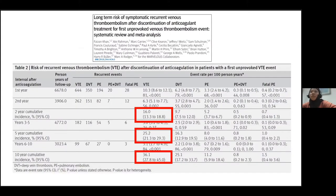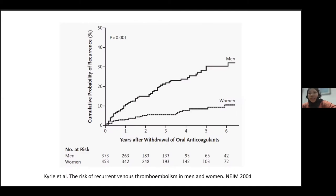If you've had an unprovoked event, your risk of recurrence is very high. This meta-analysis published in 2019, involving over 7,000 patients, looked at the rate of first recurrent VTE after discontinuation of anticoagulant treatment in patients with a first episode of unprovoked VTE. The cumulative incidence for recurrent VTE shows an increasing trend: 16% at 2 years, 25% at 5 years, and 36% at 10 years. Recurrence is also 3 times more common in men than in women in unprovoked VTE, consistently reported in several studies.